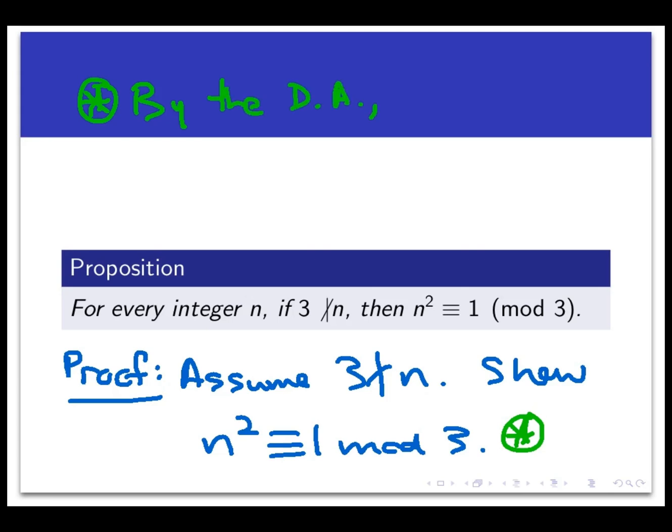We've assumed that 3 does not divide n. Well, this time if we use the division algorithm, we can make some forward progress. No matter what n is, the division algorithm says that when you divide n by 3, you're going to get a quotient and a remainder. By assuming that 3 doesn't divide n, this is telling us something about that remainder. Namely, that the remainder can't be 0. It has to be either 1 or 2.